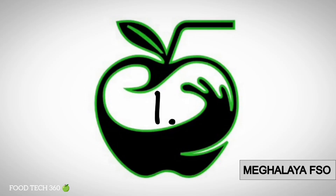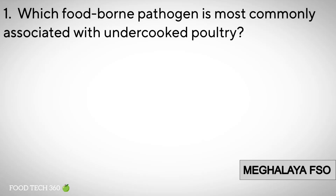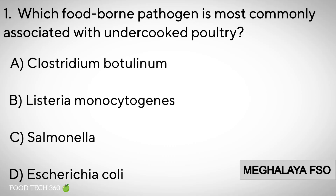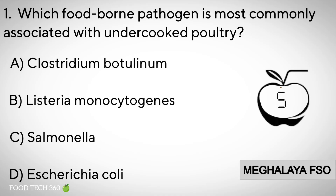Question number 1: Which foodborne pathogen is most commonly associated with undercooked poultry? A. Clostridium botulinum. B. Listeria monocytogenes. C. Salmonella. D. Escherichia coli.